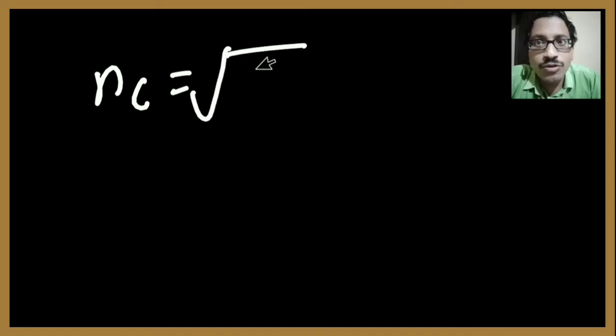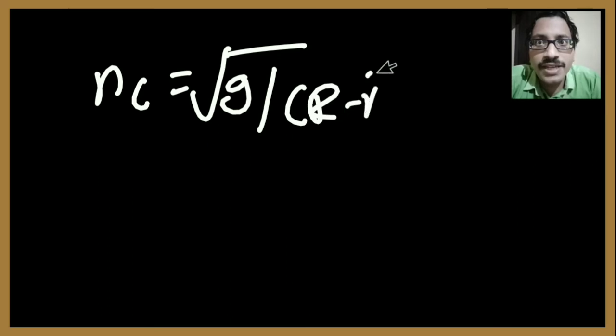The critical speed of a ball mill, Nc, equals root of g divided by (R minus r). G is a constant.